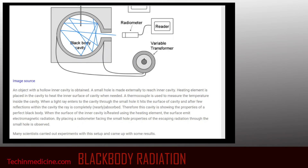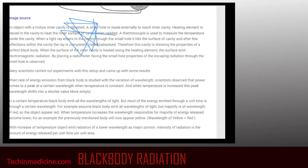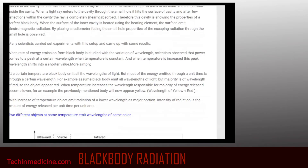When the inner cavity surface is heated using the heating element, the surface emits electromagnetic radiation. By placing a radiometer in the opening of the cavity, we can measure the wavelengths coming out. Scientists studied the rate of energy emission from the black body with variation of wavelength and observed that power comes to a peak at a certain wavelength when temperature is constant. Most of the energy emitted per unit time comes from a certain peak wavelength.